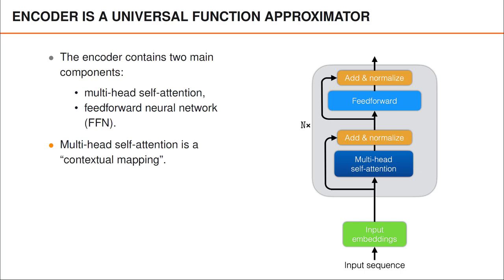Multi-head self-attention is sometimes described as a contextual mapping — this is where the embedding for a specific word is influenced by the embeddings for the other words in the sequence. Note that the term context here refers to the other words in the sequence. The feedforward network instead ignores the context and simply takes a single word embedding as input and then computes a new word embedding for the same word. We sometimes refer to this as a token-wise mapping, since it acts on one token at a time.